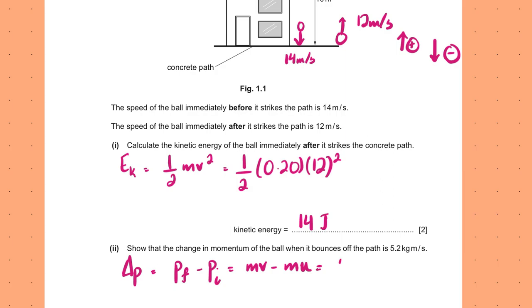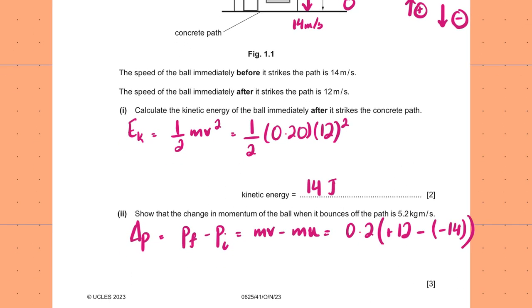Mass was 0.2. You can factor this out: M(V − U). V is +12 (upwards, positive) minus −14 (downwards, negative), so it's 12 − (−14) = 26. Then 26 × 0.2 = 5.2 kg·m/s. Another valid unit of momentum is the Newton second.